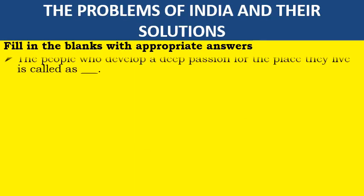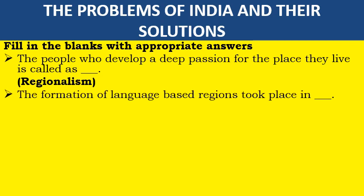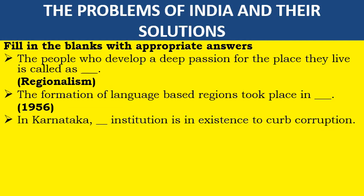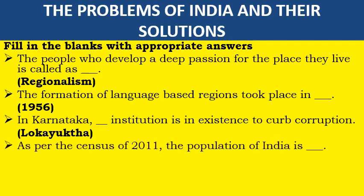First of all, fill in the blanks with appropriate answers. The people who develop a deep passion for the place they leave is called regionalism. The formation of language-based regions took place in the year 1956. In Karnataka, the institution in existence to curb corruption is Lokayukta. As per the census of 2011, the population of India is 121 crore.